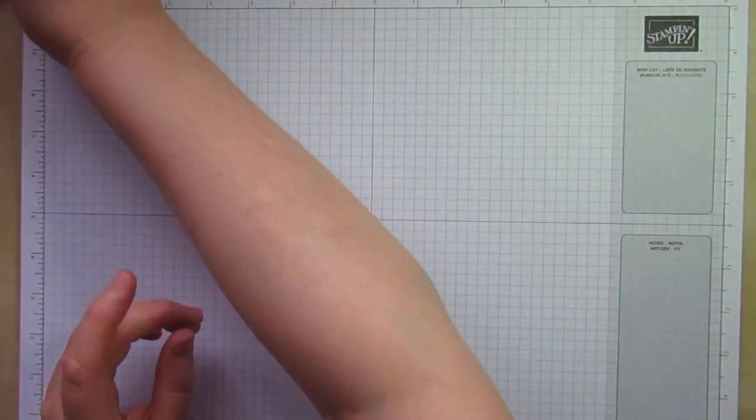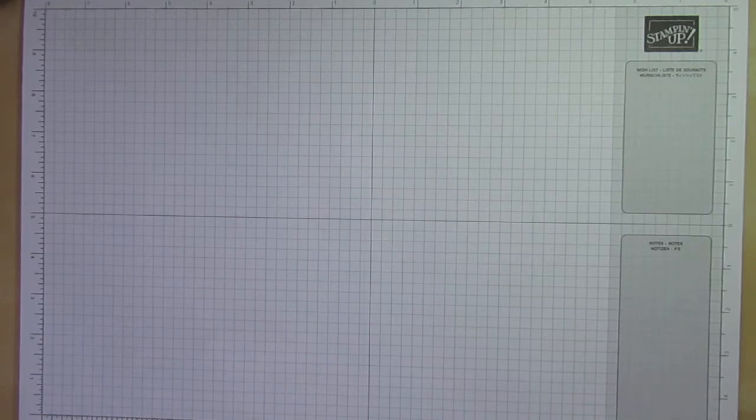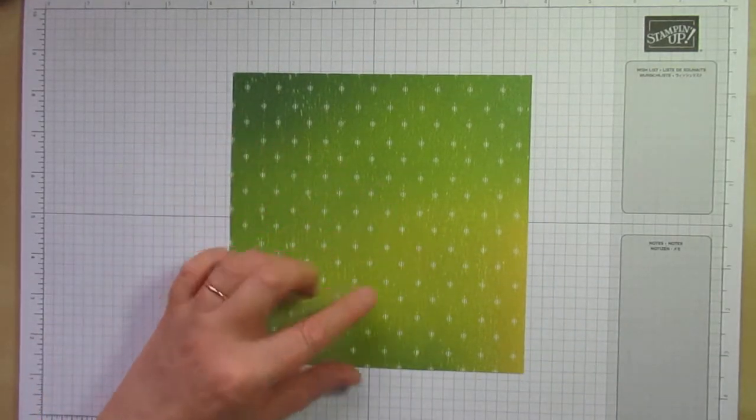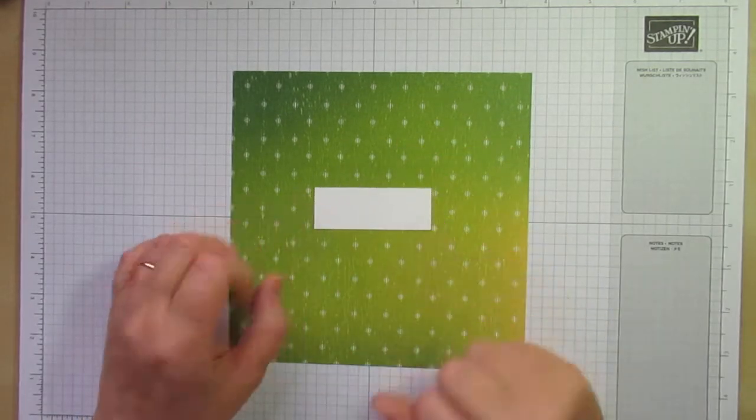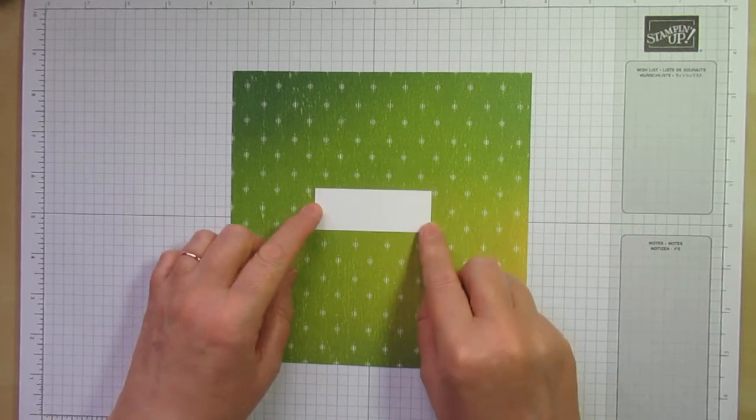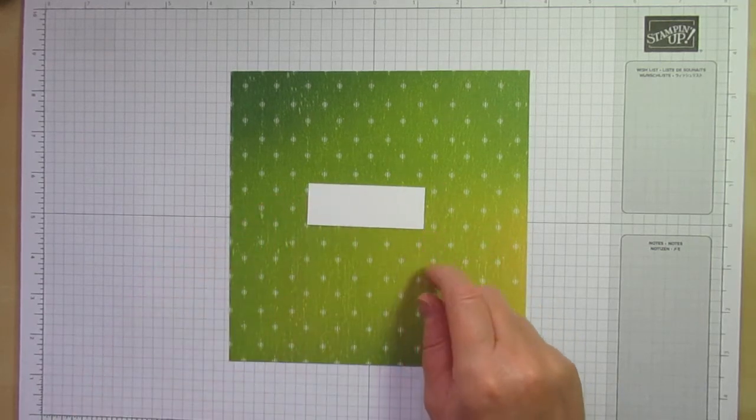So I'm going to pop that one out of the way just now and what you'll need is for this size it's a 7x7 piece of Designer Series paper and a piece of Whisper White cardstock which measures one inch by two and three quarters roughly.